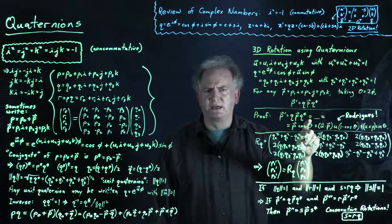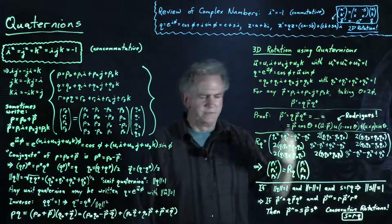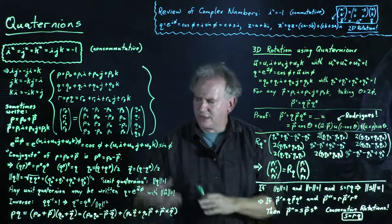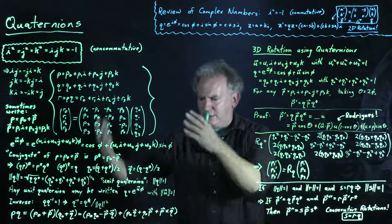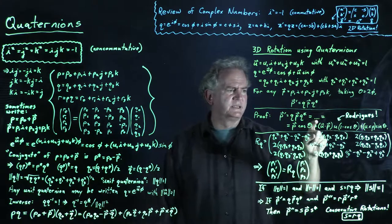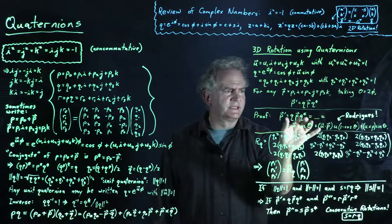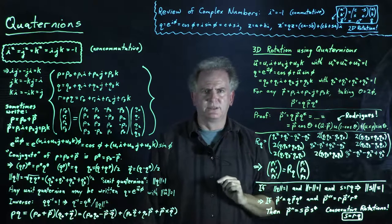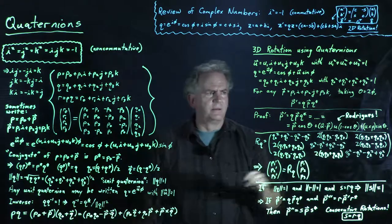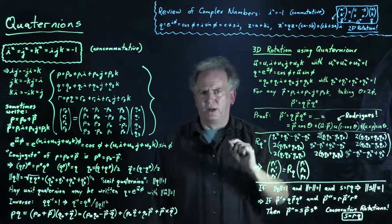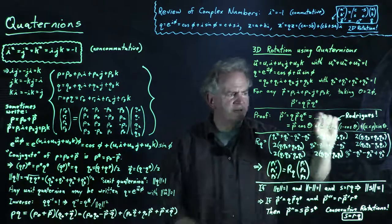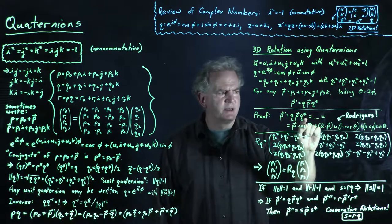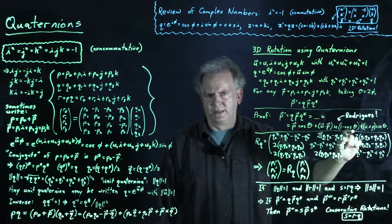I'll leave the algebra — which involves cross products, dot products, and simplifications using the quaternion identities — as an exercise. Simplify the expression after multiplying it out, and what you'll get is exactly Rodriguez's rotation formula. The intermediate algebra is available in the course notes, but I want you to write it out every step of the way using your own pen to connect the dots between the quaternion product expression and Rodriguez's rotation formula. Pause the video and do that.